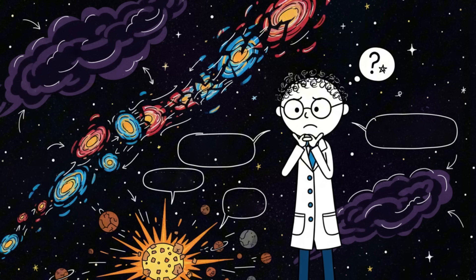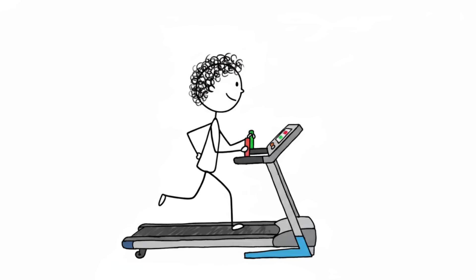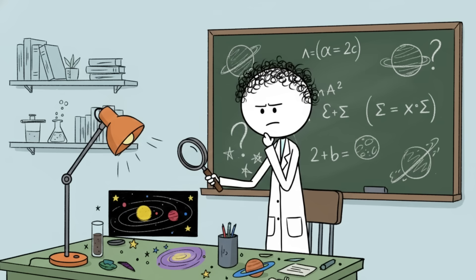First, galaxies will be torn apart. Then, solar systems will fly into pieces. Finally, the very atoms that make up your body will be ripped into shreds as the fabric of space-time stretches past the breaking point. It's like being on a treadmill that keeps getting faster until the belt eventually disintegrates and takes your legs with it. Basically, the universe is a giant rubber band, and we're all just waiting for the moment it decides it's had enough of being stretched.